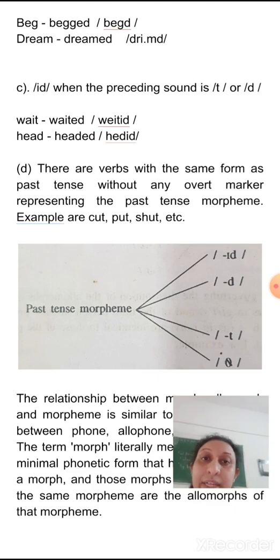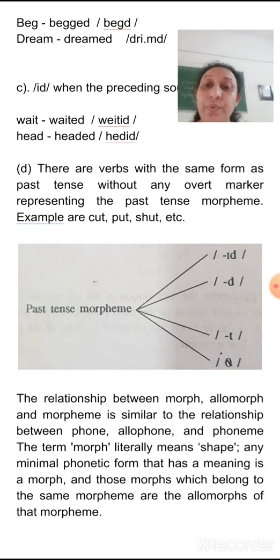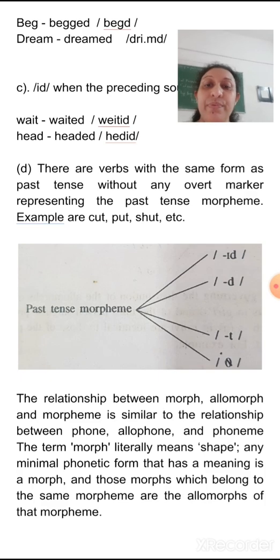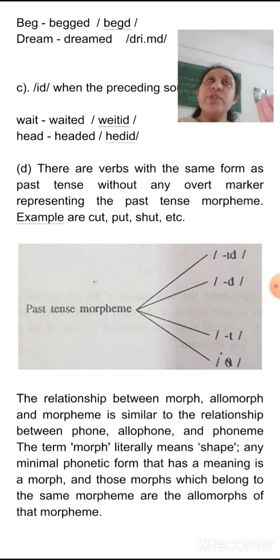The relationship between morph, allomorph, and morpheme is similar to the relationship between phone, allophone, and phoneme — which you will cover in your second module. The term 'morph' literally means shape. Any minimal phonetic form that has a meaning is a morph. And those morphs which belong to the same morpheme are the allomorphs of that morpheme.